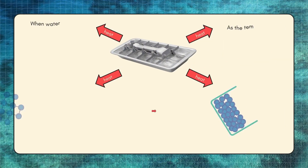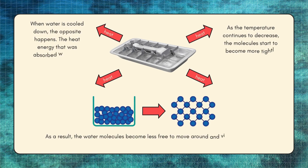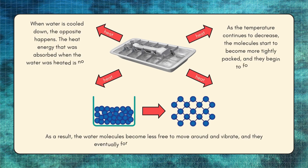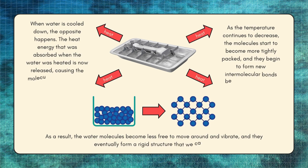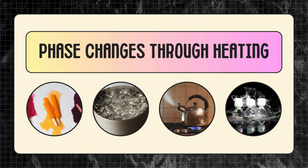When water is cooled down, the opposite happens. The heat energy that was absorbed when the water was heated is now released, causing the molecules to slow down and move less. As the temperature continues to decrease, the molecules start to become more tightly packed, and they begin to form new intermolecular bonds between each other. As a result, the water molecules become less free to move around and vibrate, and they eventually form a rigid structure that we call ice.